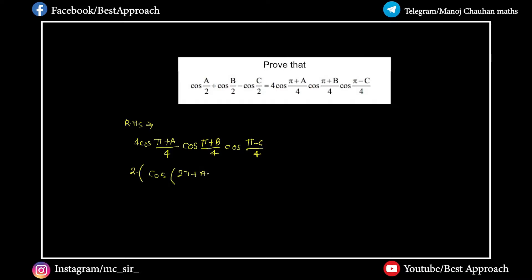2 cos of pi plus a plus b divided by 4, and what happens is a minus b. Cos pi from pi cancels, it will be a minus b divided by 4, into cos pi minus c divided by 4.